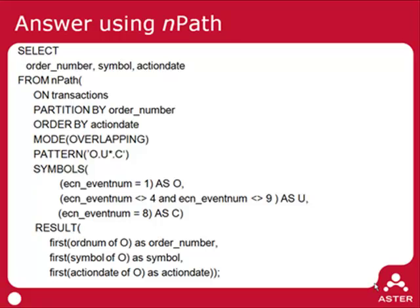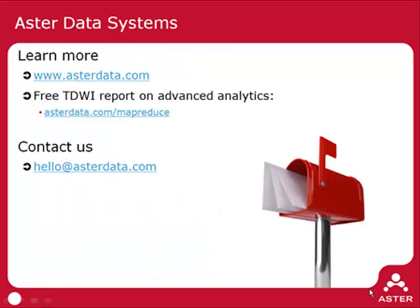The nPath query will simply output a single row for every time such an order was found in the system. Thanks for listening to this nPath tutorial — I hope you enjoyed it. If you have any questions, you can check us out at astrodata.com or email us at hello@astrodata.com. Be sure to look for the third installment of the SQLMR tutorial, which will go through running your own SQLMR function.